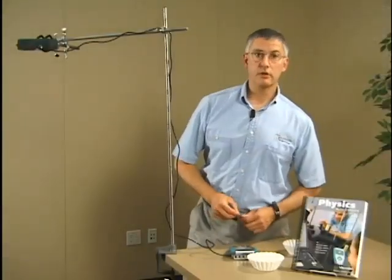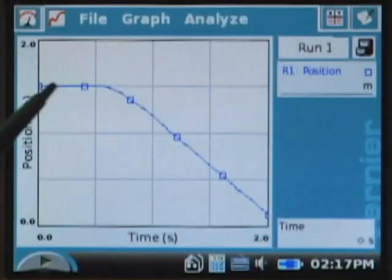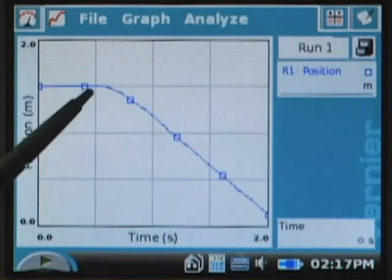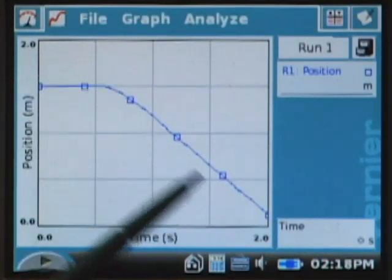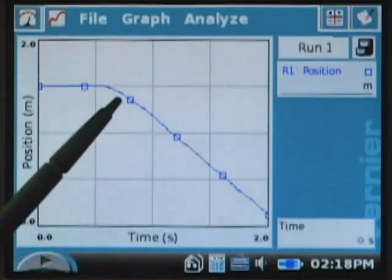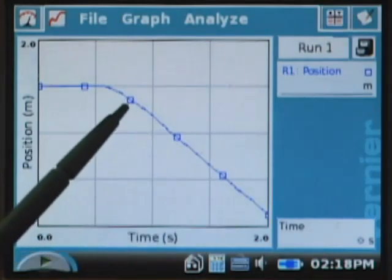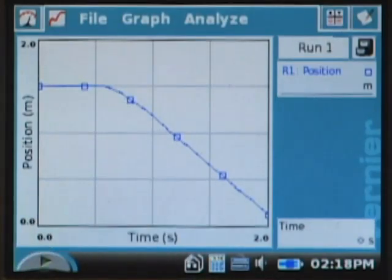Now, if we take a look at the graph, you can see that in this part of the graph I was holding the filter steady, then I let go, and the filter started falling and speeding up, but then the velocity reached a constant value. You can see that because of the linear slope of this position time graph.